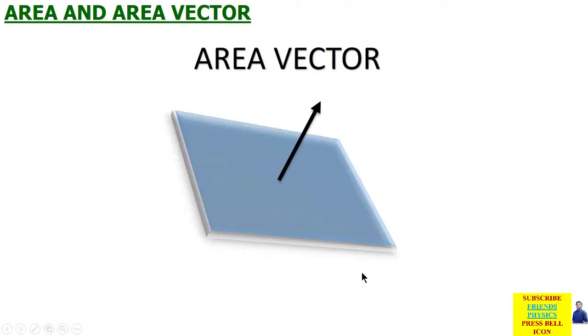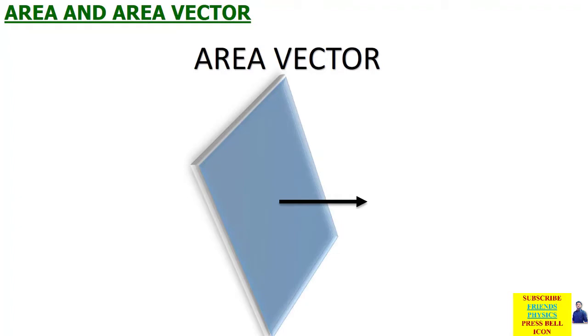Whiteboard एक area है। यह whiteboard आपकी तरफ pointed है, तो एक imaginary vector है जो हम consider कर सकते हैं कि इस whiteboard की direction हमारी तरफ है — यह रहा area और यह रहा उसका area vector। याद रखें कि area vector और area आपस में mutually perpendicular होते हैं। अब अगर area rotate करेगा तो area vector भी उसके साथ rotate करेगा — greater the rotation, greater will be the rotation of area vector.